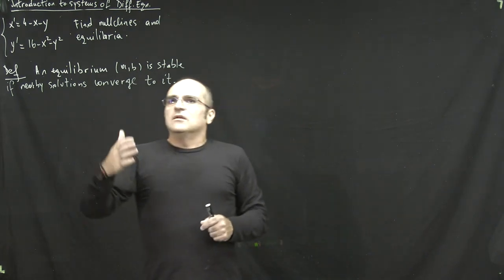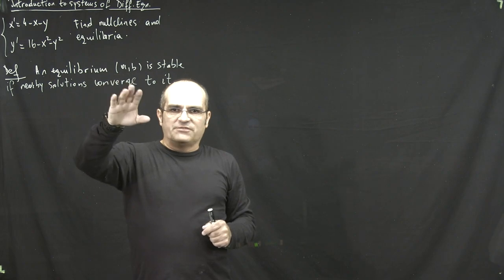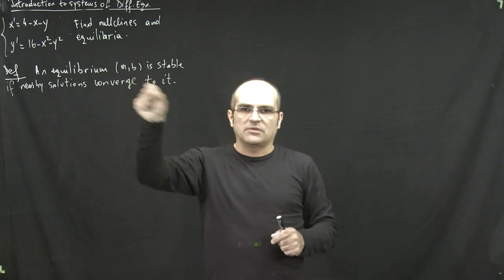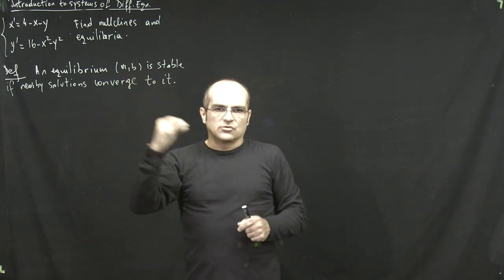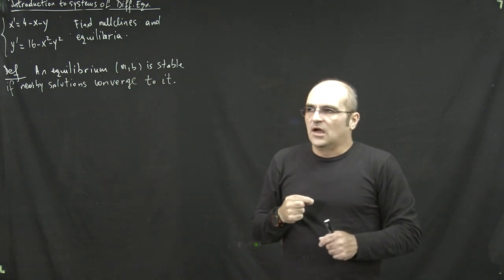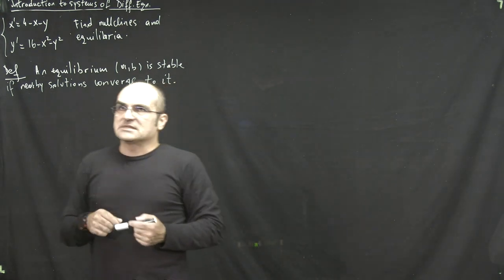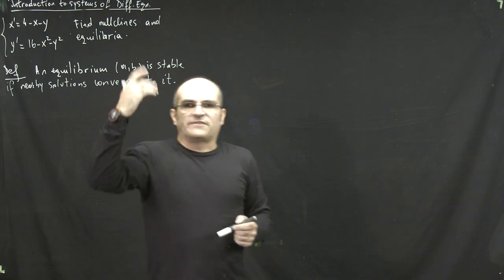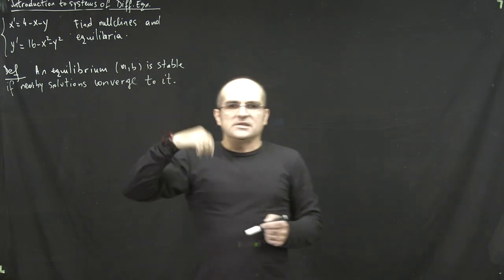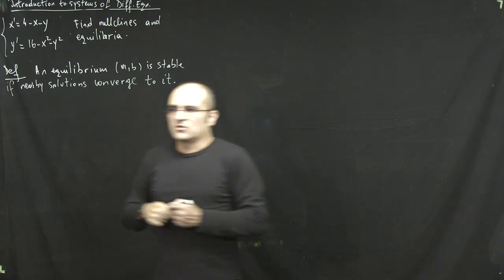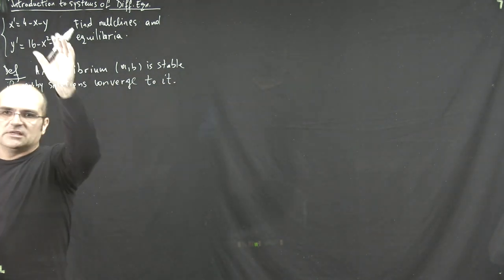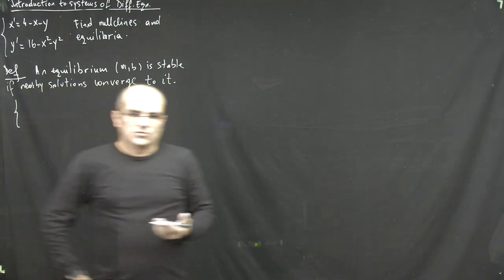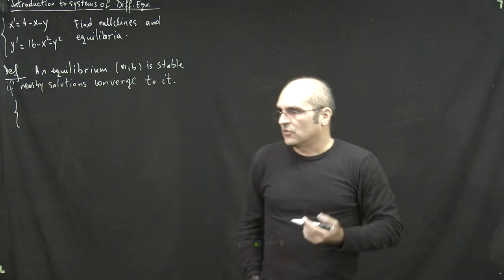For now, I'll answer stability questions based on what you see on the plotter. You click on several solutions around the point, and if the solution appears to approach the point, then the point is stable, and unstable otherwise. Finding equilibrium points should be relatively easy, but for highly nonlinear systems with more complicated terms, it may not be straightforward.